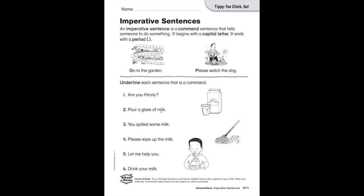Number six: 'Drink your milk.' I'm telling you to do something—drink your milk. It ends in a period, it's telling you to do something, it's an imperative sentence. Give it an underline.